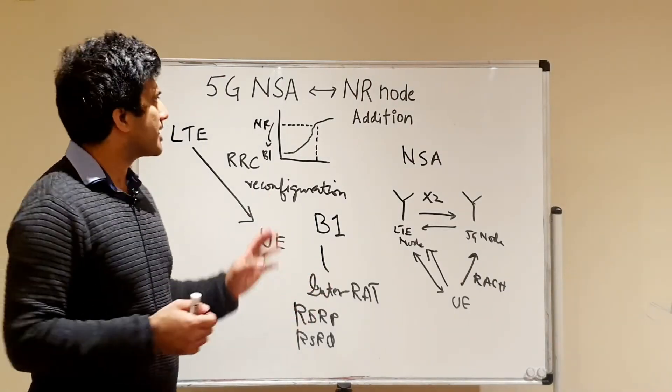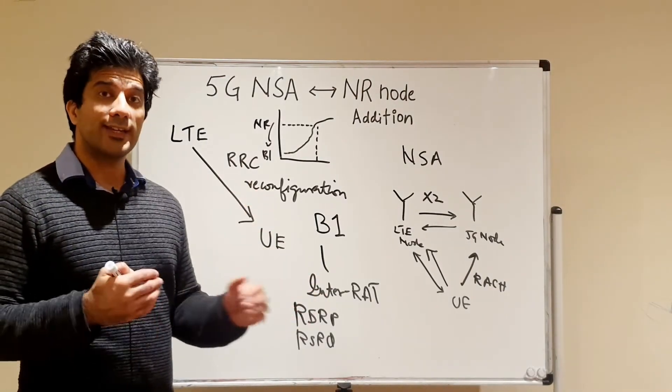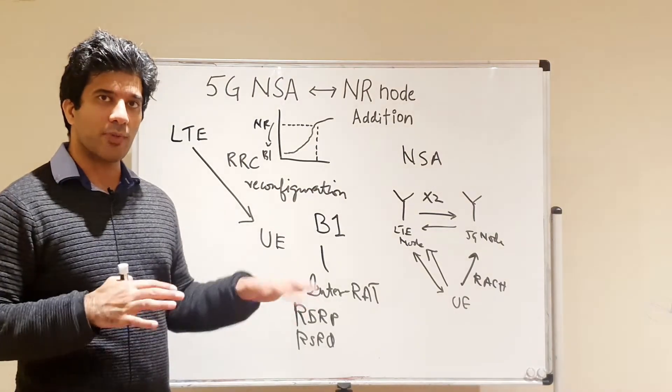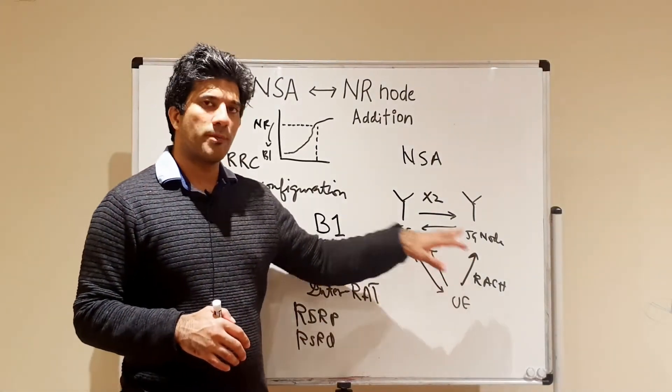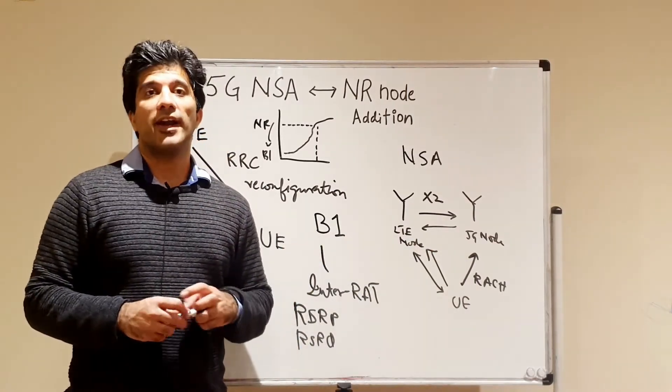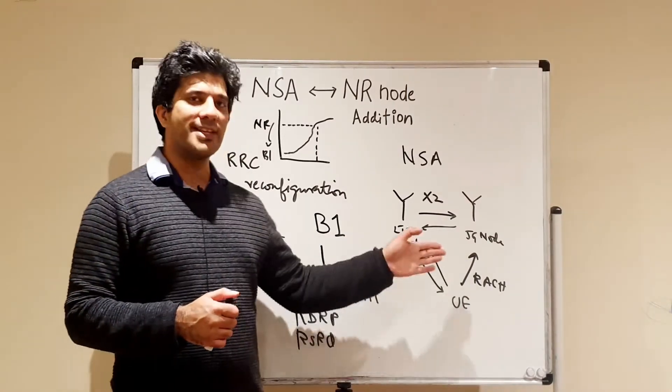So this is the basic concept that how NR cell is added into an LTE node already. The master node will always be LTE and then your secondary node will be 5G.